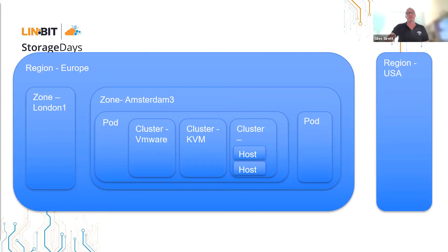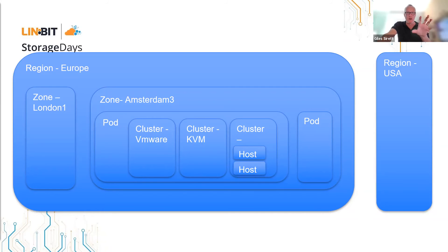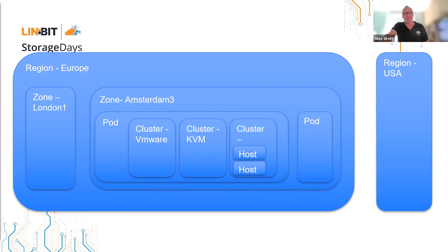CloudStack also has a concept of secondary storage, where we put our low-grade artifacts — the stuff we don't need high performance for — things like images, templates, and snapshots. This can be much cheaper, lower-grade storage. Most people use NFS, although we also support Swift and can back that storage out to S3 as well. CloudStack has a number of constructs to allow you to organize it as it scales. The top level we have is a region, which is effectively an administrative concept — literally a region like North America, Europe, or Asia.